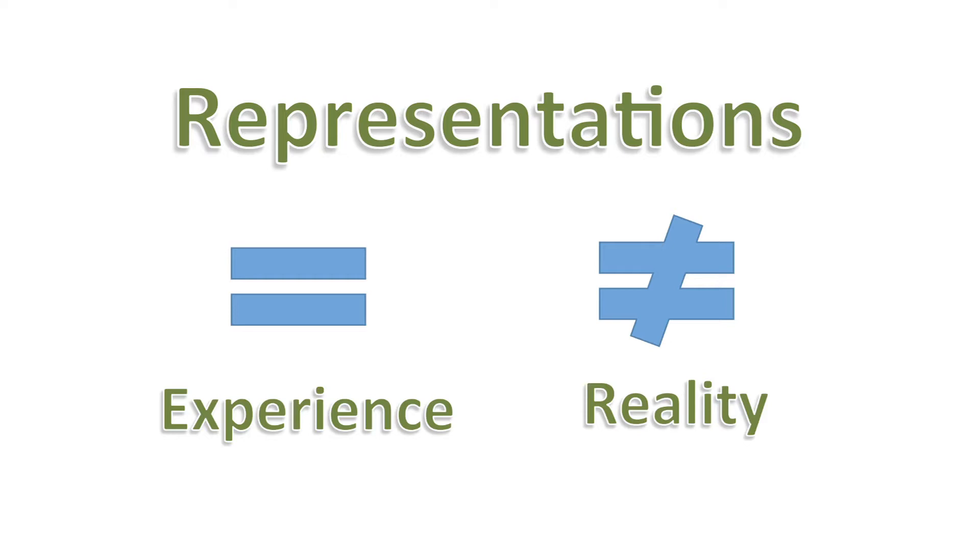We do experience things in representations. We look at green and say that's green. We look at yellow and say that's yellow. But they're not green — they're not yellow. There's nothing in the universe that is suddenly attaching the value of green to it. That's just how we interpret it. Representations may be the same as how we experience things, but they're not the same as reality.